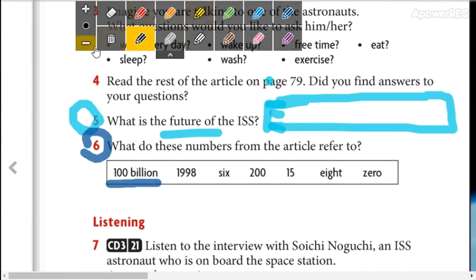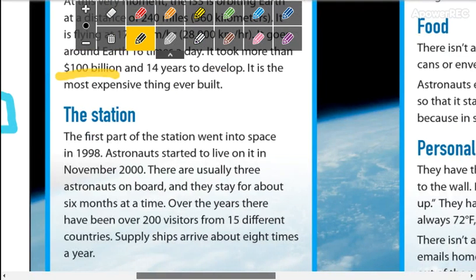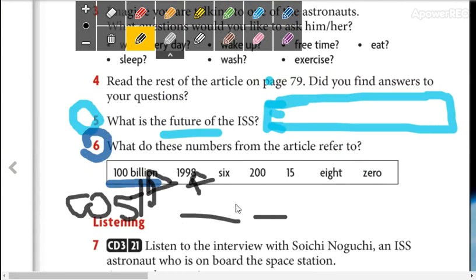So I write, 100 billion is the cost—or you can say the quantity of money. 1998 is a year. According to the text, 1998 is the year the first part was launched. I'm not going to do this; you are going to do this. You write here, okay? If you don't get it, you can write it on the side.